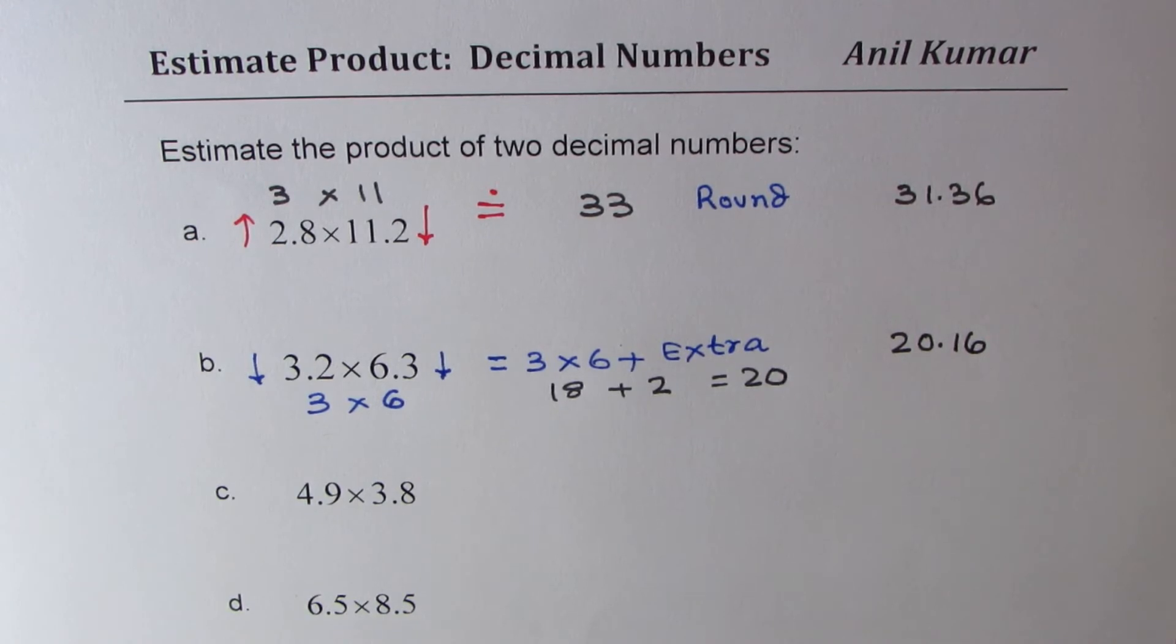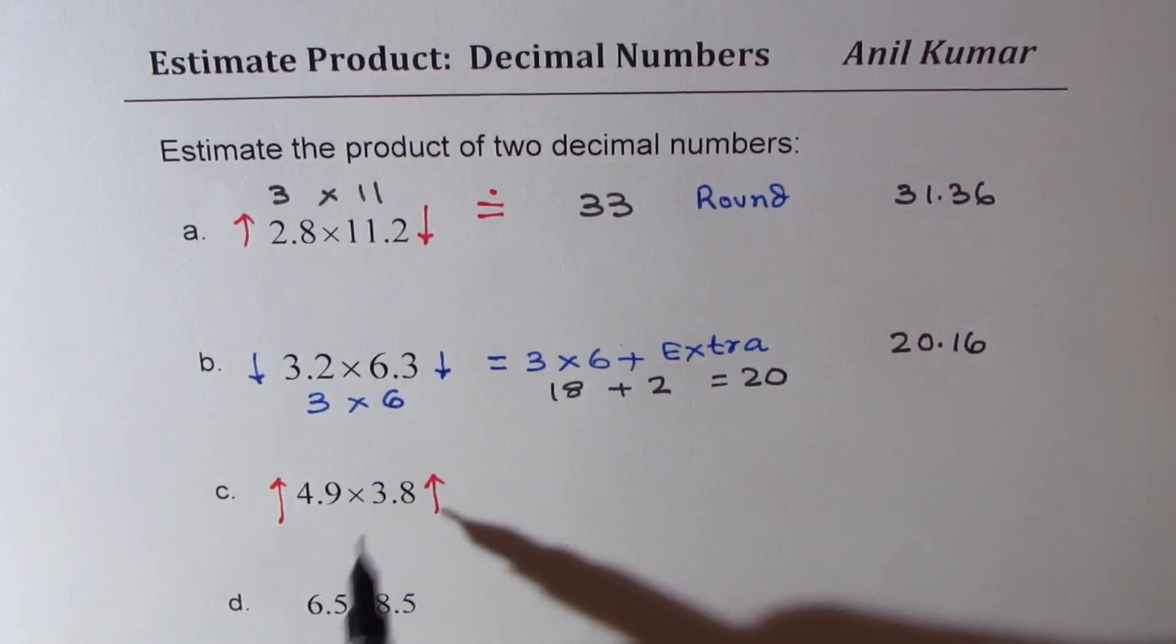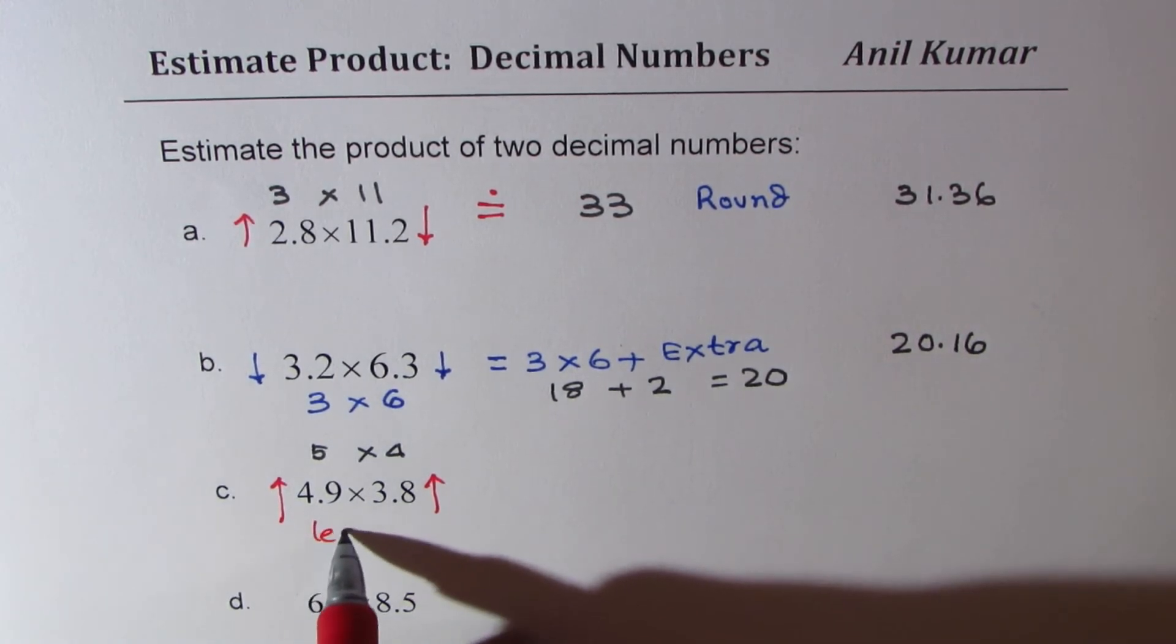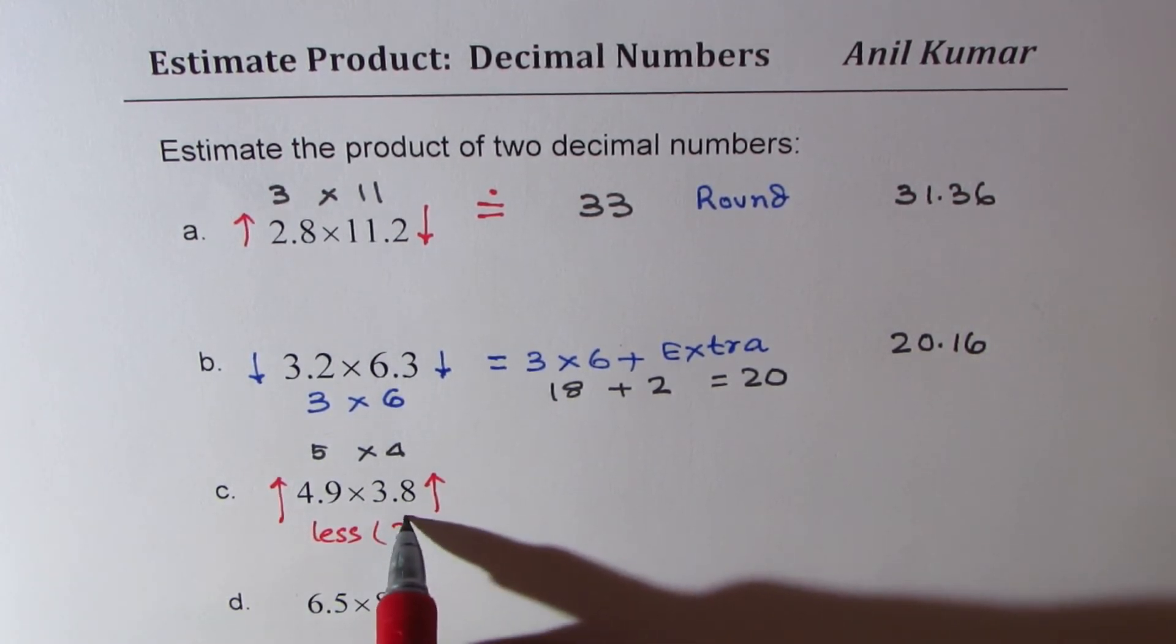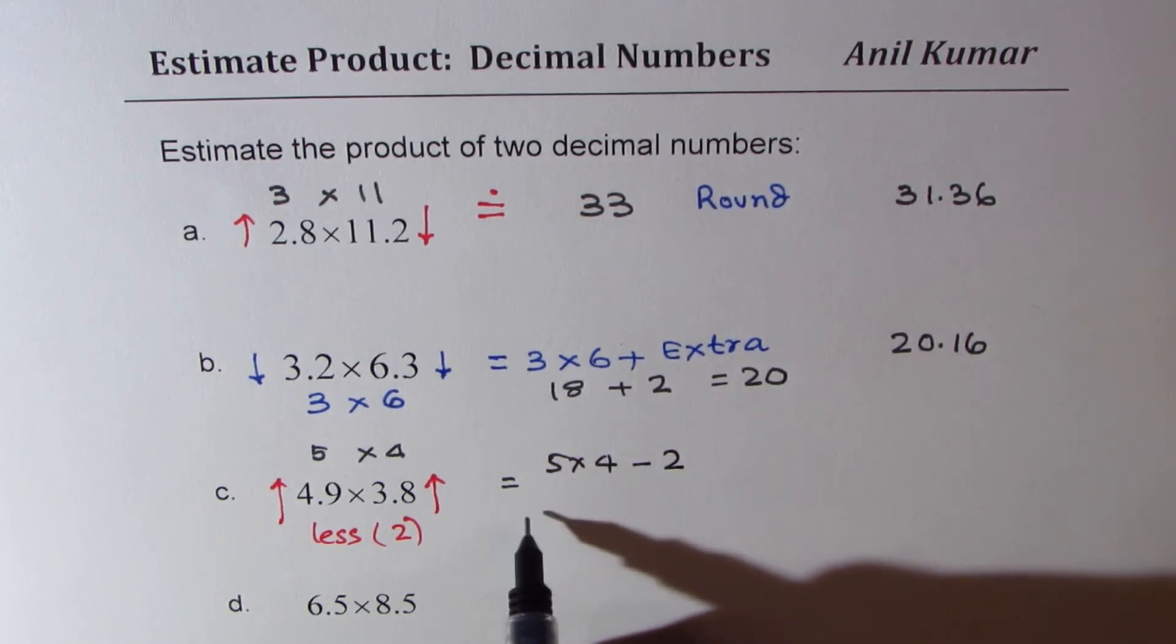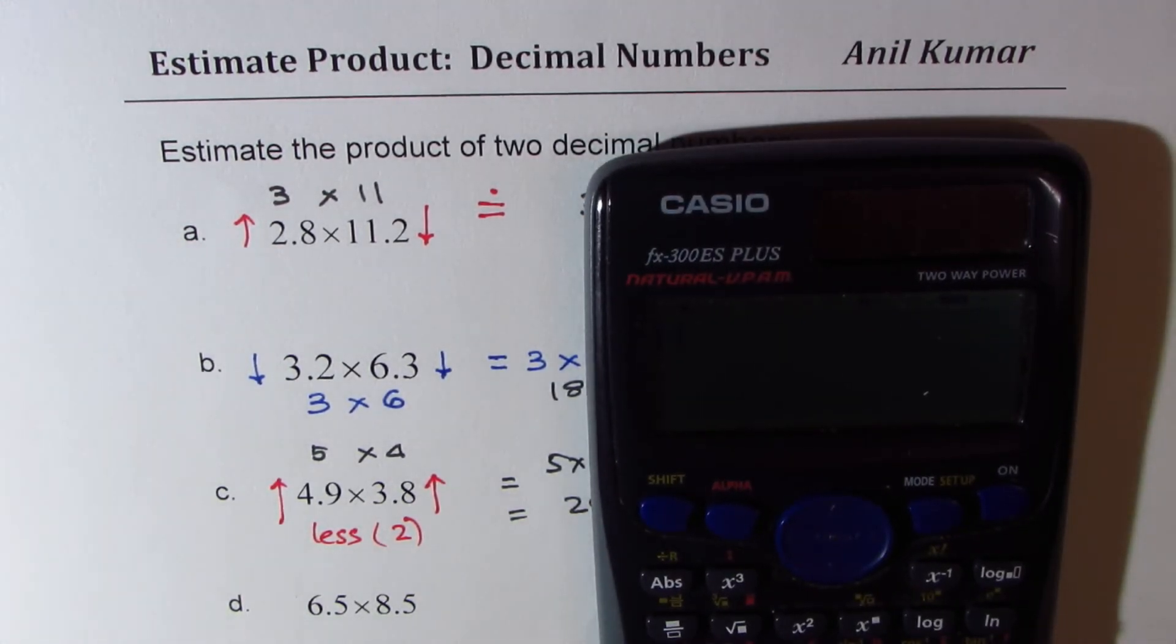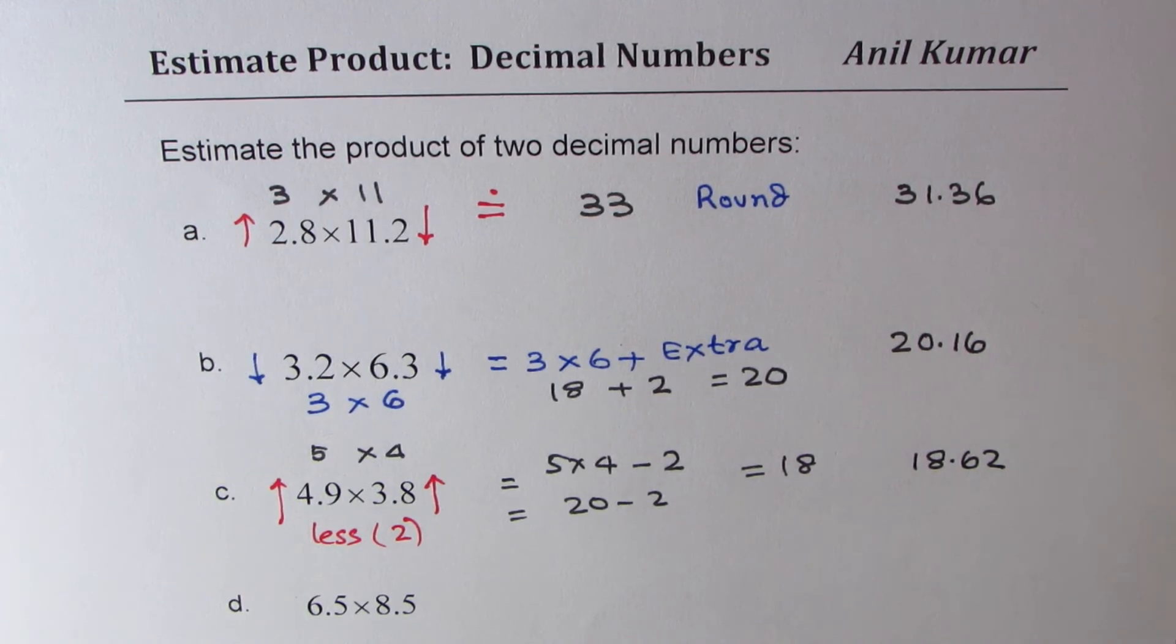Next here is 4.9, so that could be estimated higher. 3.8 also higher and we can take away something. So what we'll do here is we'll do 5 times 4 and then we'll take away less some number. Less how much? Now 0.9 and 0.8, let's say less 2. So small number. So what we will do here is 5 times 4 less 2, which is equal to 20 less 2 as 18, our estimate. Let's multiply 4.9 with 3.8, we get 18.62. So I hope you are getting confidence of estimating fairly accurately.